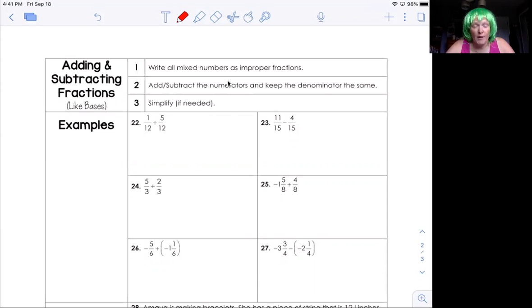We looked at parts of a fraction, we talked about improper, we talked about mixed. Now we're going to add and subtract fractions and we're starting off nice and slow with like bases, which means that both numbers on the bottom are the same and makes the problems a lot easier.